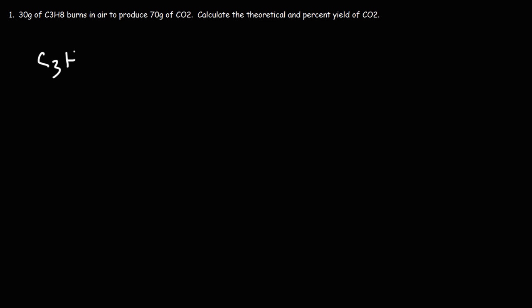The first thing we need to do is write a chemical reaction. Propane reacts with the oxygen in the air, O2, and produces water and carbon dioxide. This is known as a combustion reaction. The products of a combustion reaction are always water and CO2, and these reactions are highly exothermic, meaning they release a lot of thermal energy into the environment.